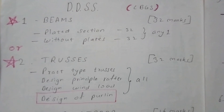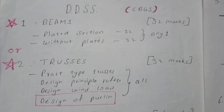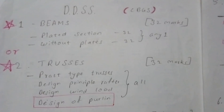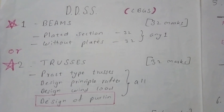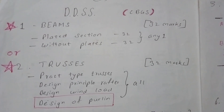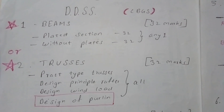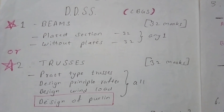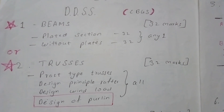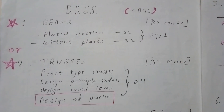In Trusses, the drawing part is a little time-consuming. If you get a sheet, you have to draw the truss properly and show all loading and wind load. Both Beams and Trusses are easy topics; Trusses is a bit more time-consuming but arguably easier than Beams. The choice is yours.